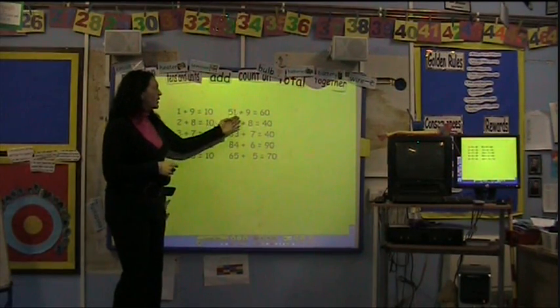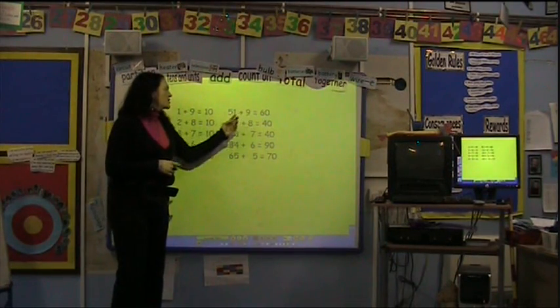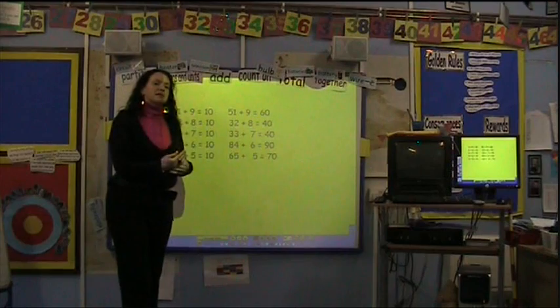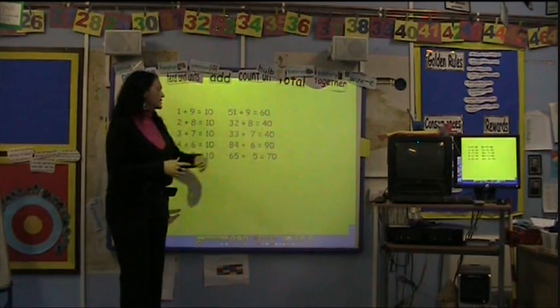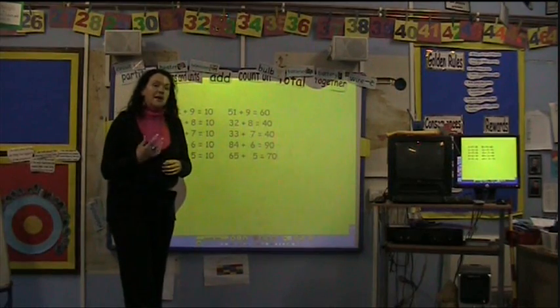So for example, we've got 51 add 9. The children know that 1 and 9 make 10. So 51 add 9 must take them up to the next multiple of 10, which would be 60. So if a child saw a sum like this, they would quite easily be able to solve it.